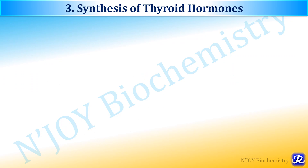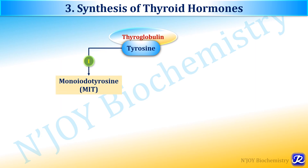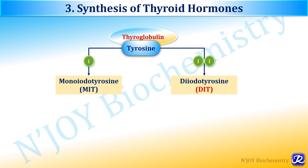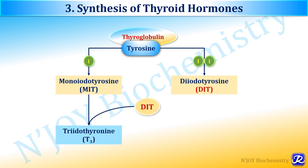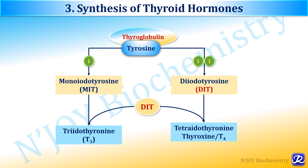Thyroid hormones — thyroxine and triiodothyronine (T3) — are synthesized from the tyrosine residue of the protein thyroglobulin and activated iodine. One activated iodine leads to formation of monoiodothyrosine (MIT), and when two activated iodine atoms are incorporated in tyrosine, diiodothyrosine (DIT) is formed. When one DIT and one MIT combine, triiodothyronine (T3) is formed. When two DIT combine, tetraiodothyronine — thyroxine or T4 — is formed. The protein thyroglobulin then undergoes proteolytic breakdown to release the free hormones T3 and T4.